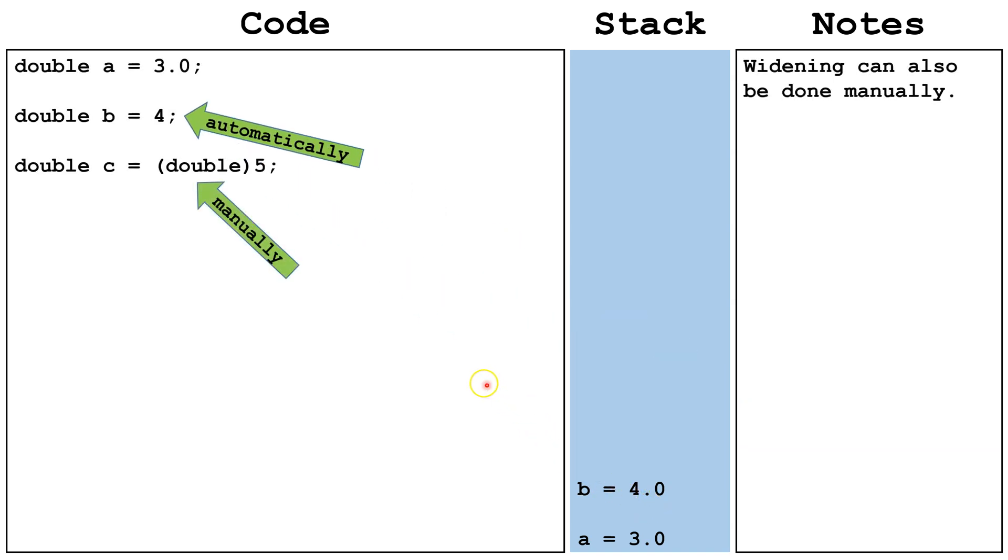Now let's look at another example. Here, we have double c equals double 5. The double here is manually casting it to a double. This is a good practice, because it lets other programmers know what's going on, but it's not required in the case of widening.